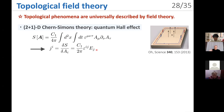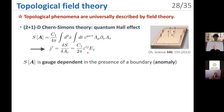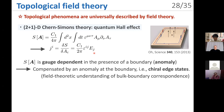For this topological action, the current is obtained and the quantum Hall effect is described by this equation. Notably, the action is gauge dependent in the presence of a boundary — this gauge non-invariance is called a quantum anomaly. To retain gauge invariance, this gauge non-invariance is compensated by an anomaly at the boundary, which requires the presence of chiral edge states. This is a field-theoretical understanding of bulk-boundary correspondence.